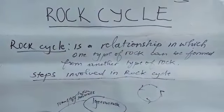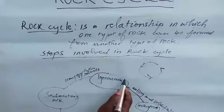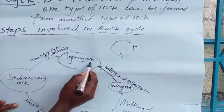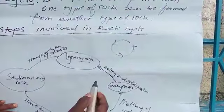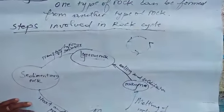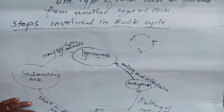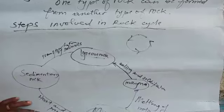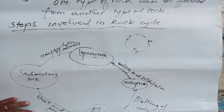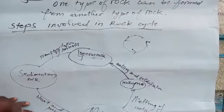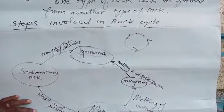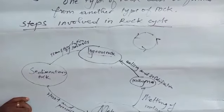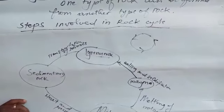First, igneous rock. Igneous rock is formed by the cooling and solidification of magma. In the previous episode, we discussed about the origin of magma. We said that magma is formed due to radioactive decay, which occurs in the interior of the earth.